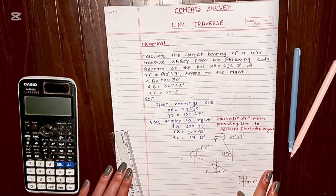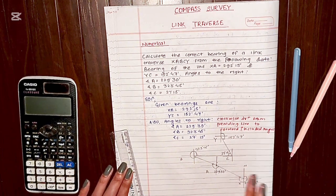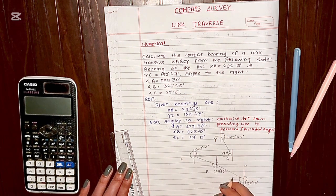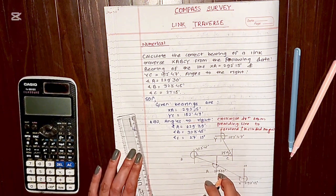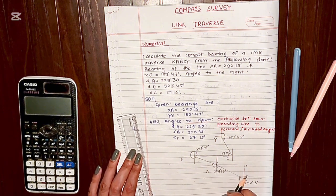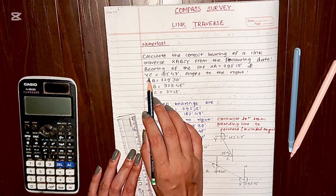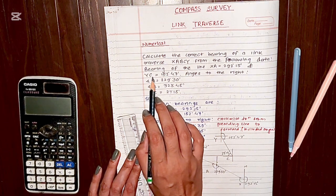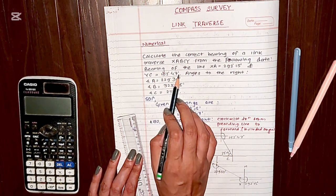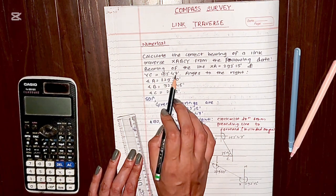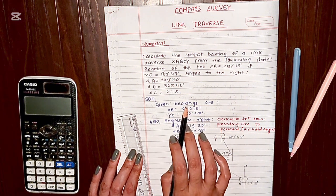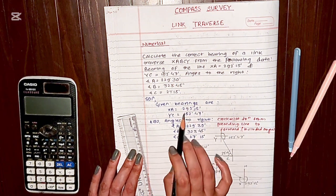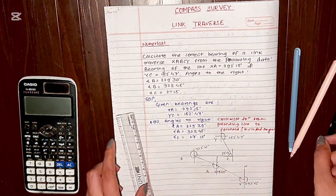This is just a rough sketch from the given data. Now we are going to calculate the bearings of each line and check whether the last bearing we calculate matches the given bearing of YC. If not, we will calculate the error and then correct it.